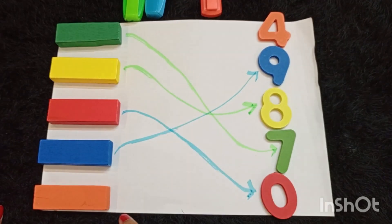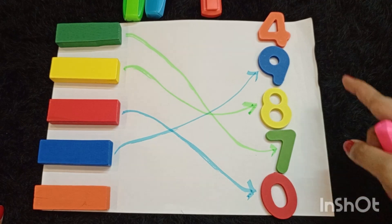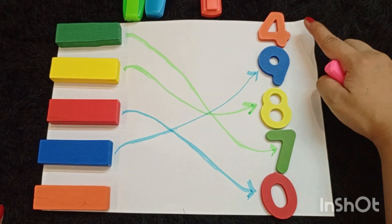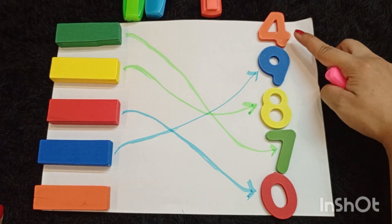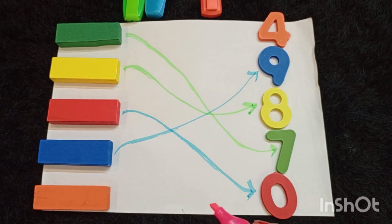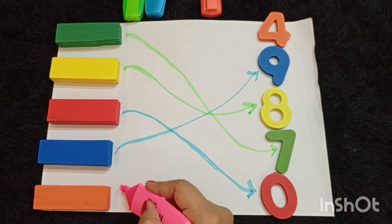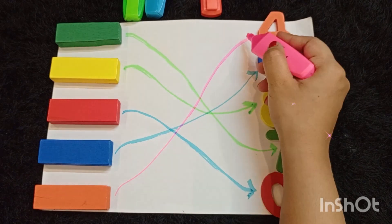Now look at the last block that is orange in color. You can see here, number 4 is in orange color. We are going to match the orange block with number 4.